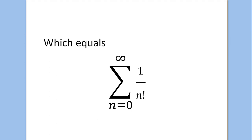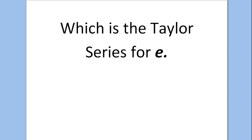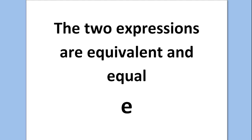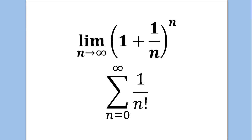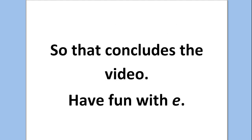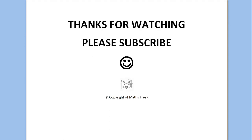So that equals the sum from n equals 0 to infinity of 1 over n factorial, which is the Taylor series for e — which is what we were trying to prove. That concludes the proof: the two expressions are equivalent and both equal e. The limit as n goes to infinity of (1 + 1/n) to the n, and the sum from n equals 0 to infinity of 1 over n factorial — they both equal e. Thanks for watching, please subscribe, and I'll see you on the next video.